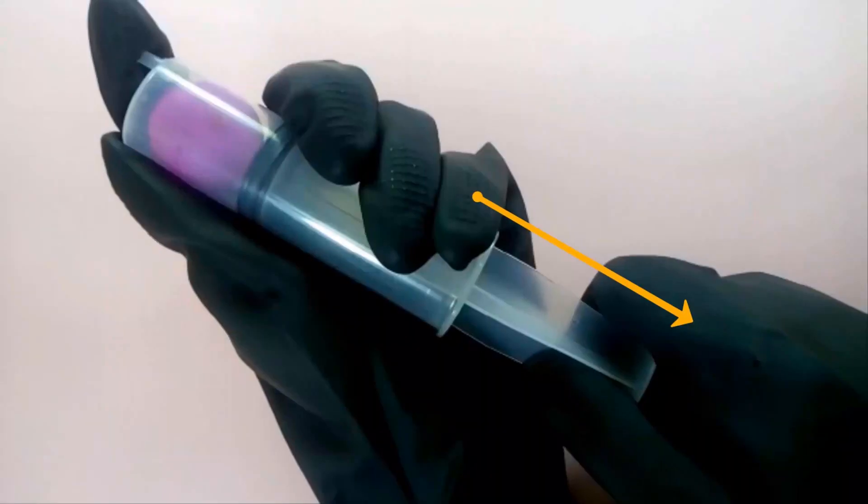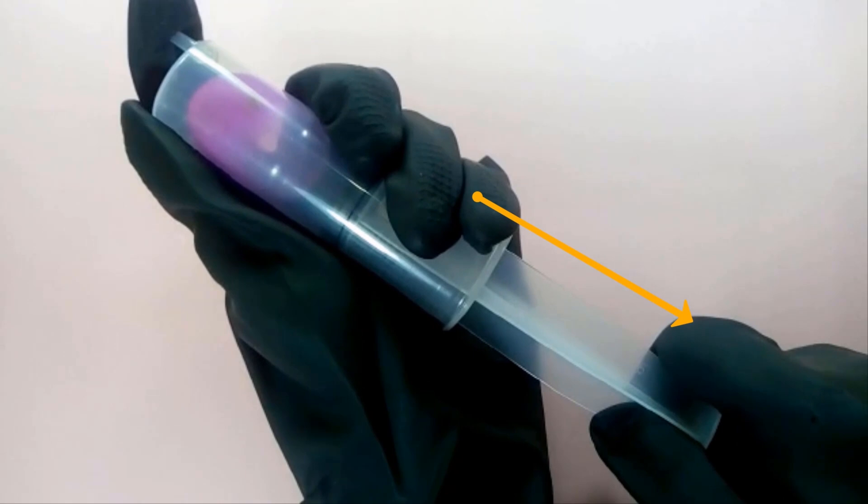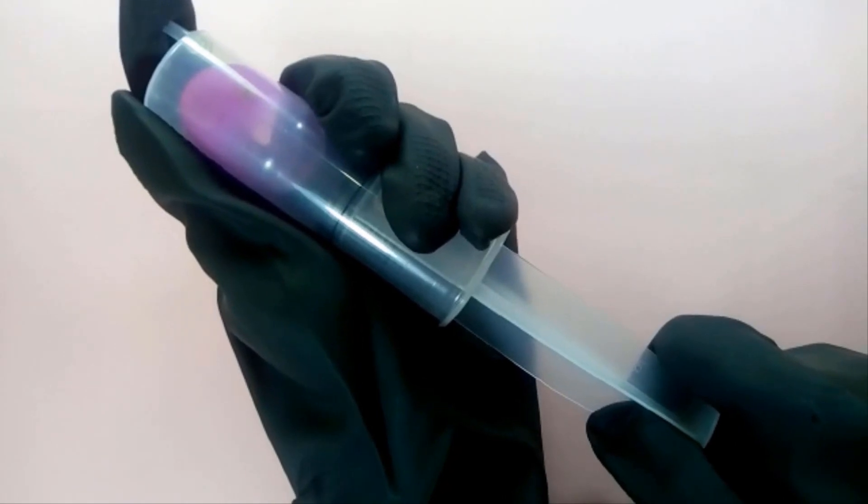Now, I will pull the plunger upwards. See, pressure is decreasing, but the volume of the balloon is increasing. That means when pressure decreases, volume increases.